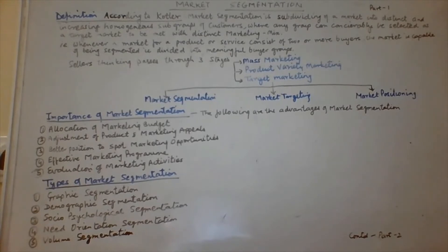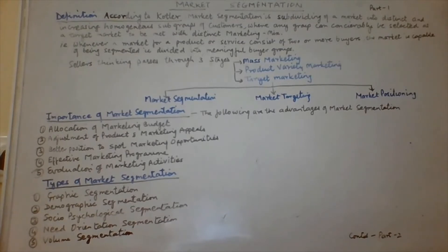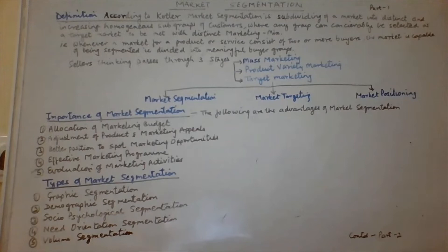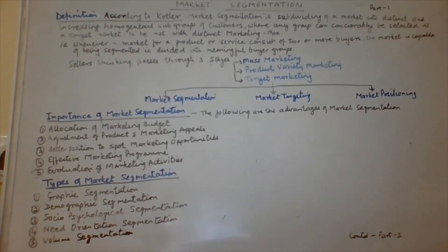The selected group is called the target market because the whole marketing strategies will be focused on it. The group the marketing manager selects is to be met with a distinct marketing mix — popularly known as the 4Ps: product, price, promotions, and place. Different combinations of the 4Ps can be specific for a particular target market.